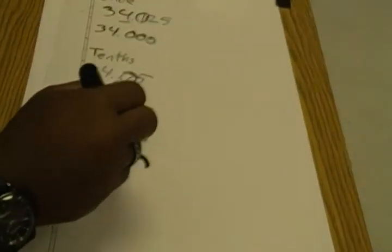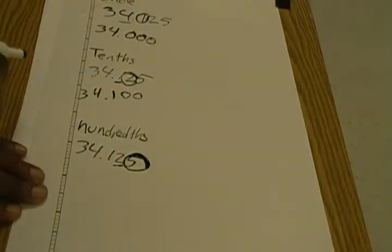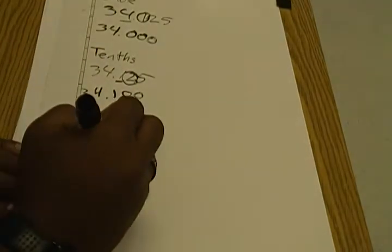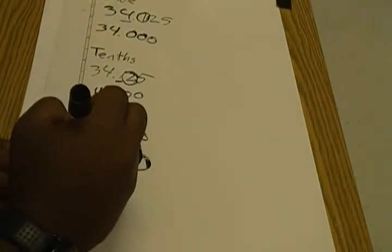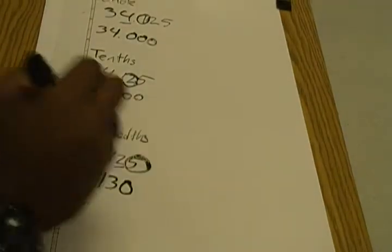In this case, the five is in the thousandths place. That five tells us we need to round up. So the two gets bumped up and turns into a three. Everything to the left stays the same; everything to the right changes to zero.